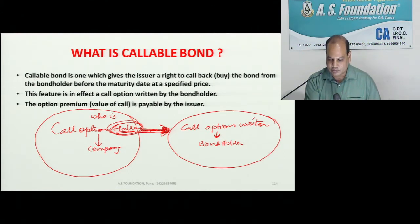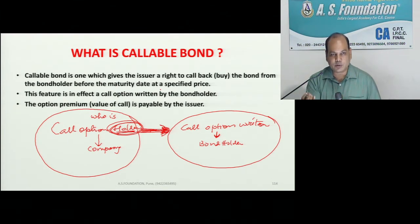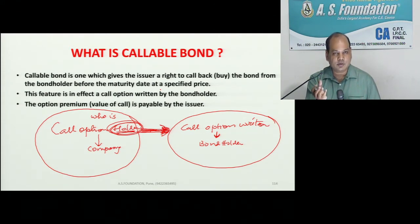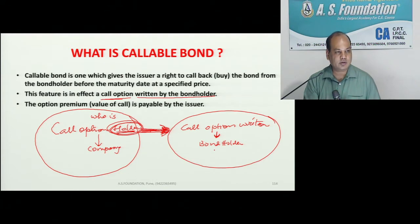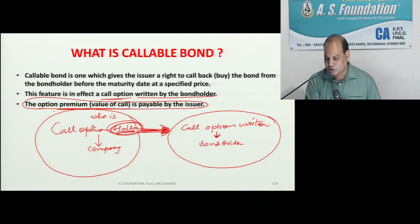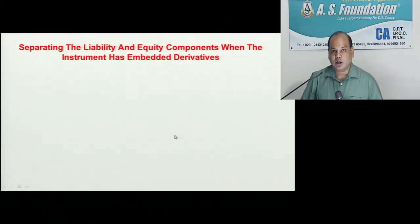A callable bond gives the issuer the right to call back the bond from the bond holder before the maturity date at a specified price — like a call option, which gives the holder the right to buy at a predetermined price. This feature is in effect a call option granted by the bond holder. The option premium — the value of the call — is payable by the issuer to the bond holder.